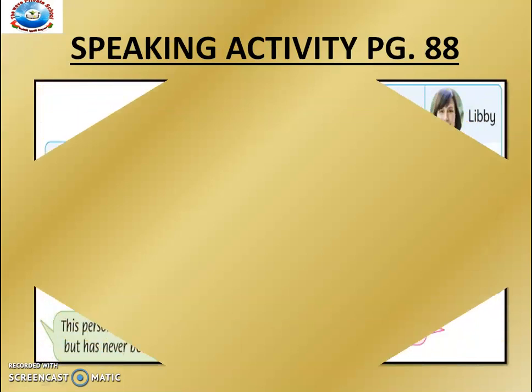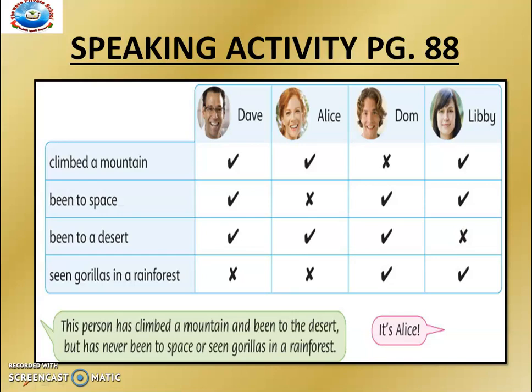Now let's do a speaking activity given on page 88. On the slide, you can see four people and on the other side four different activities, with right ticks and crosses. A right tick means that activity is being performed by that person, and a cross means he or she has not done it. For the first one, Mr. Dave: Dave has climbed a mountain and has been to space and to a desert, but has never seen a gorilla in the rainforest.